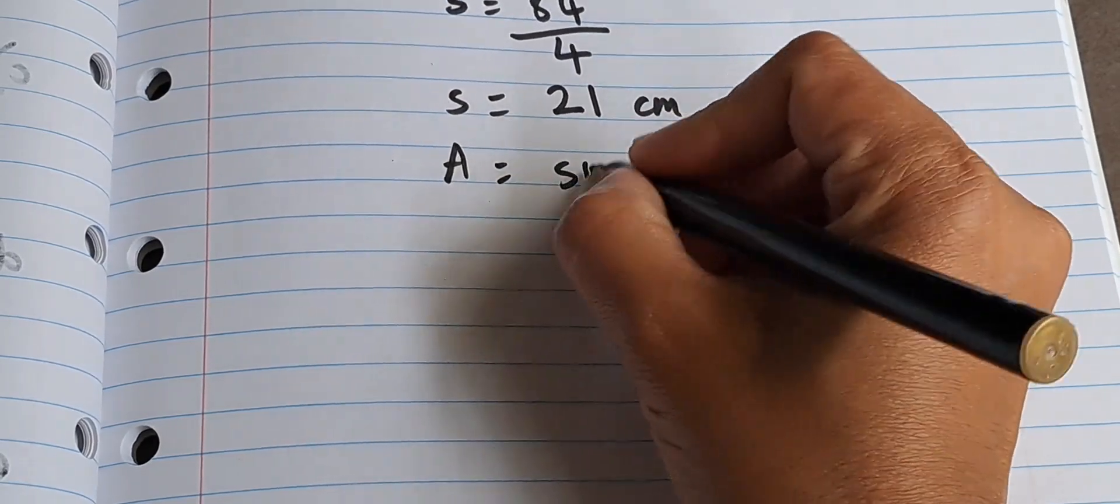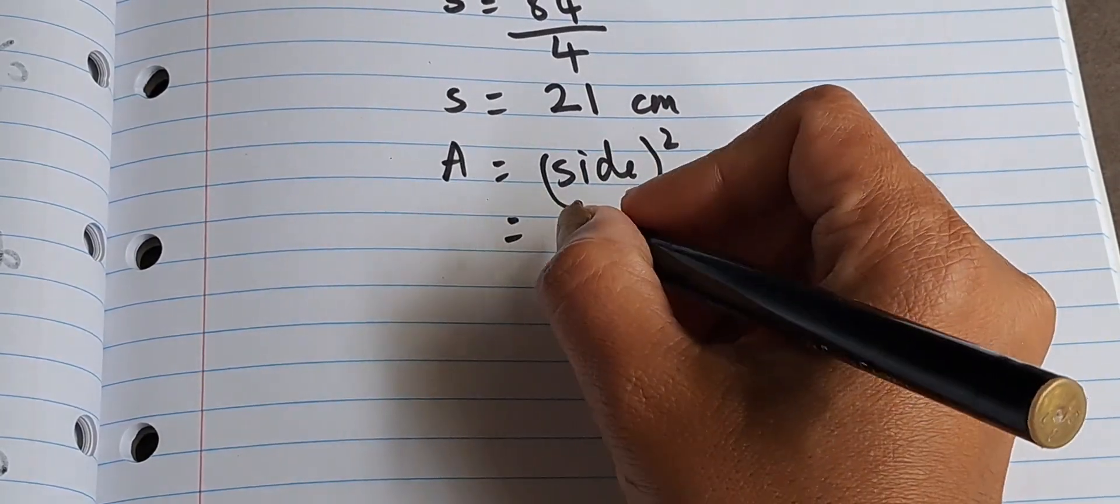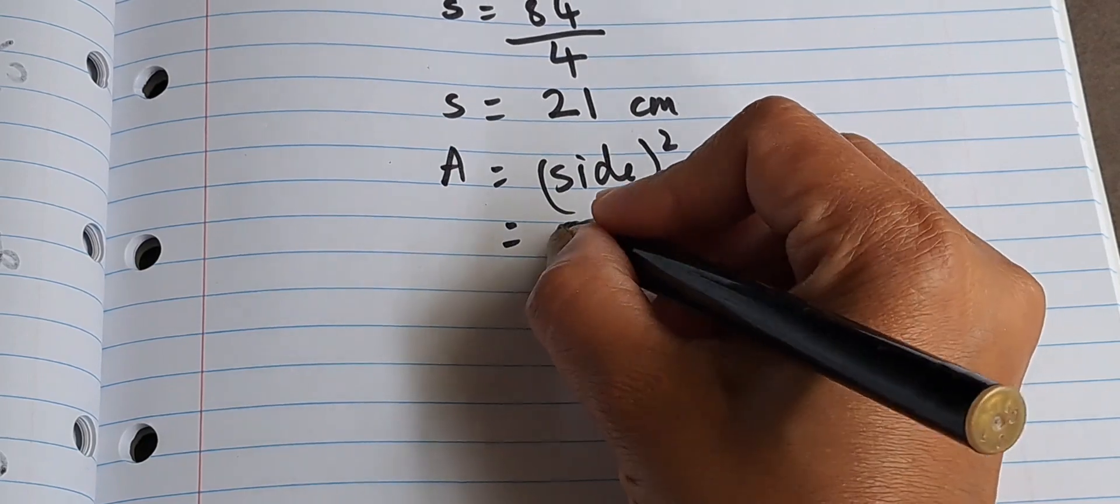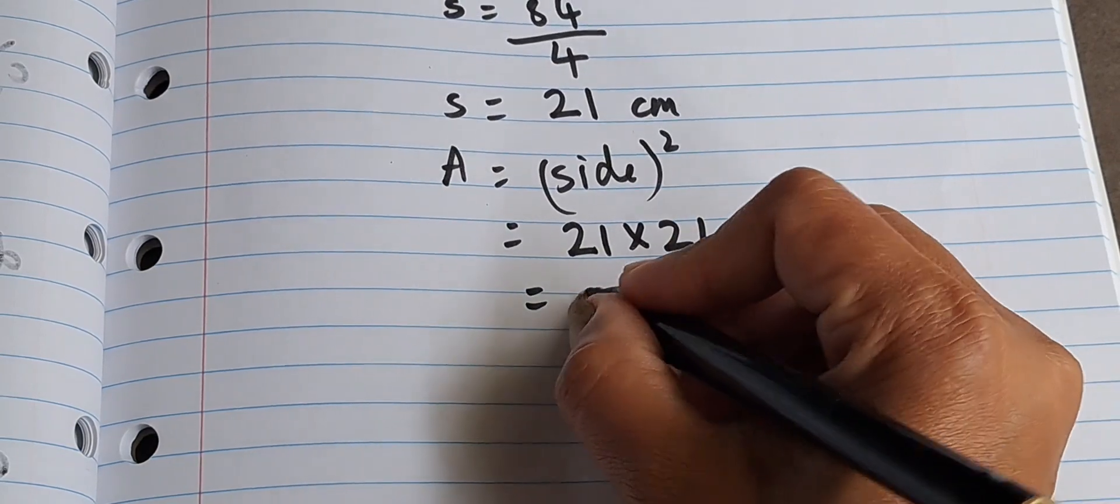That is 21 times 21. So the answer is 441 centimeter square. So the area of the square is 441 centimeters.